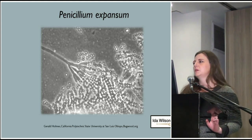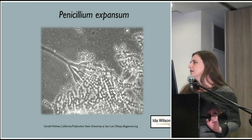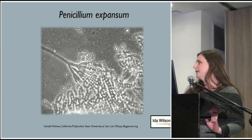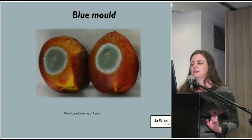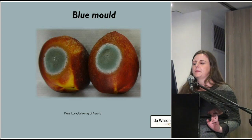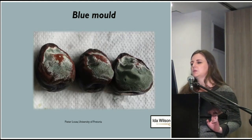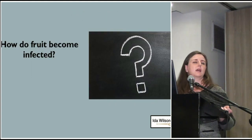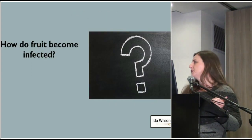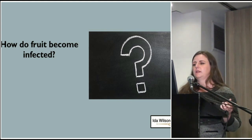Penicillium expansum is also a post-harvest fungal disease of many crops around the world, including oranges. If you see that green orange in your fruit bowl, that's also caused by Penicillium species. This is what it looks like — blue mould on nectarines and blue mould on plums. The question now is how do these fruits become infected? What is the process that causes decay?